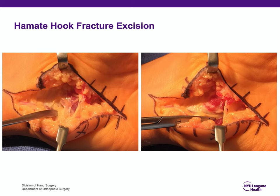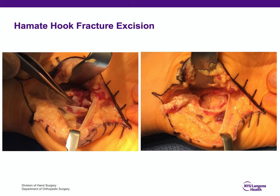When I do this operation, I dissect out the deep motor branch of the ulnar nerve, protect it, and then elevate the periosteum on both sides of the hamate hook with the ulnar nerve branch always visualized. The hamate hook is then excised — that's the base of the hamate hook, which must be smoothed with a rongeur — and the periosteum is used to cover the hamate hook. Postoperatively, I use a brief period of splint immobilization, and patients can return to full activities including golf and tennis approximately six to eight weeks after surgery.